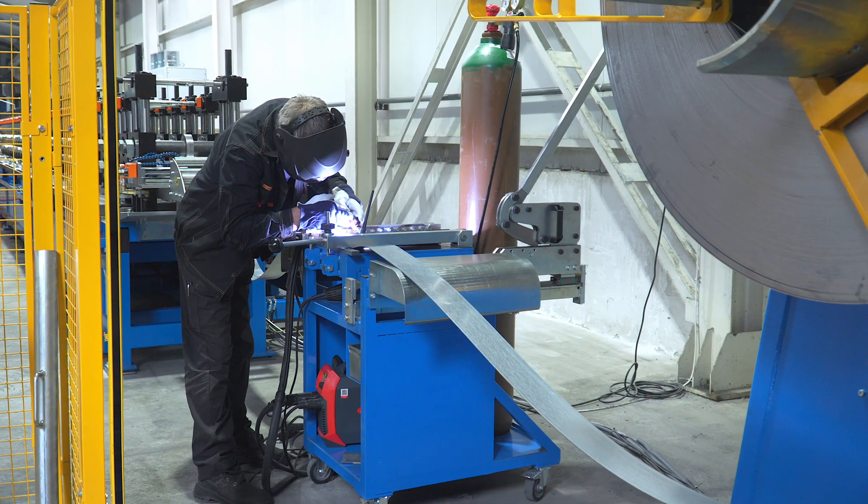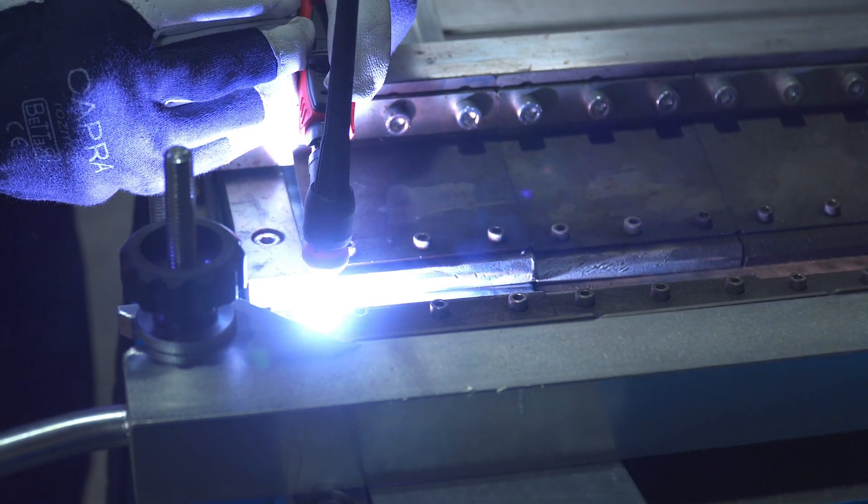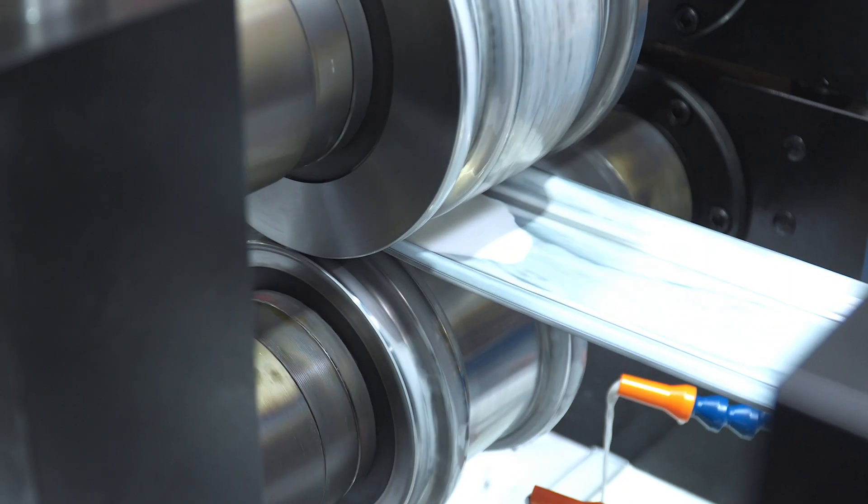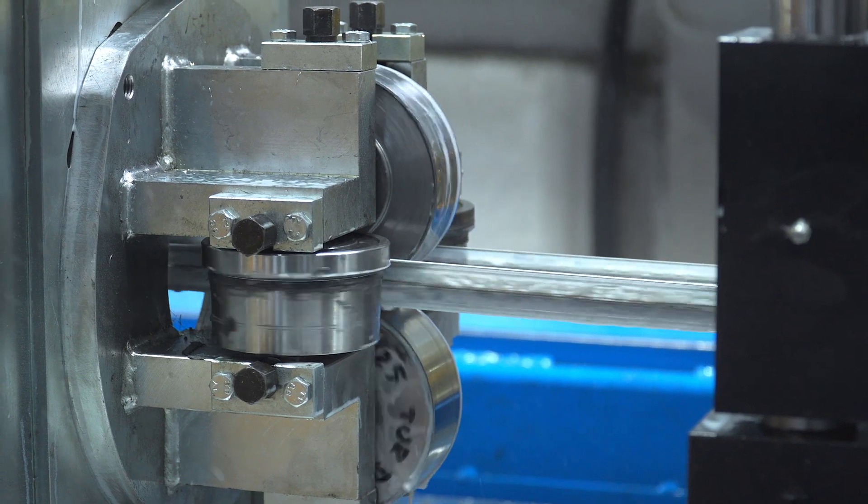If a larger batch is produced, the ends of the tape rolls are welded. Later, the profile is shaped, straightened, and dried from the emulsion. The emulsion is needed to absorb the heat generated during friction.